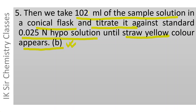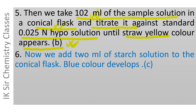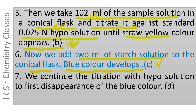We take 102 ml of the sample solution from the BOD bottle into a conical flask and titrate against 0.025 N hypo solution until a straw yellow color appears, represented by B. Then we add 2 ml of starch indicator solution to the conical flask; a blue color develops, represented by C. We continue the titration with hypo solution until the first disappearance of the blue color, represented by T. These are the various steps involved in Winkler's method for the determination of dissolved oxygen.